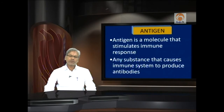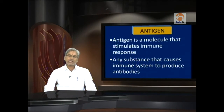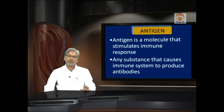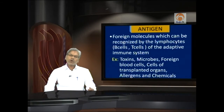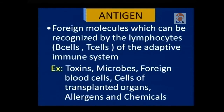Now let us consider in brief the properties of antigen. An antigen is a molecule that stimulates an immune response — that is, a response by our immune system by way of antibody production. Any substance that causes the immune system to produce antibodies is immunogenic and can function as an antigen. Foreign molecules which can be recognized by the lymphocytes of the adaptive immune system also function as antigens.